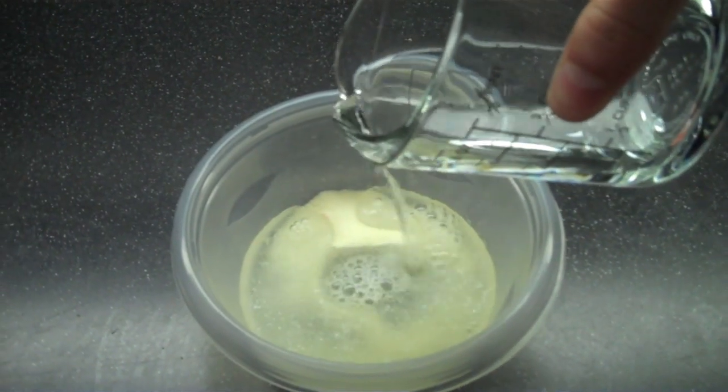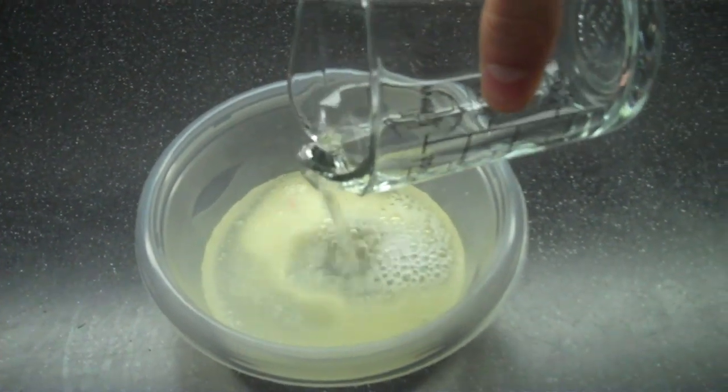For larger scales, for every one pound of gelatin, use a gallon of water.